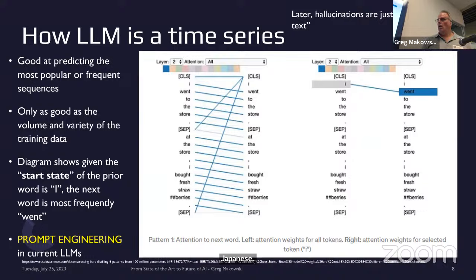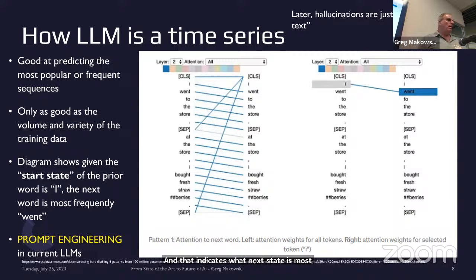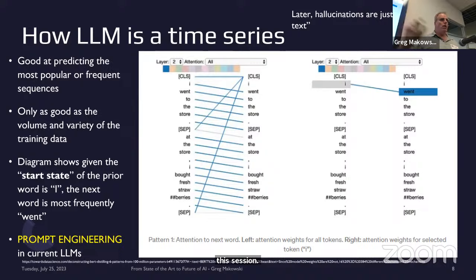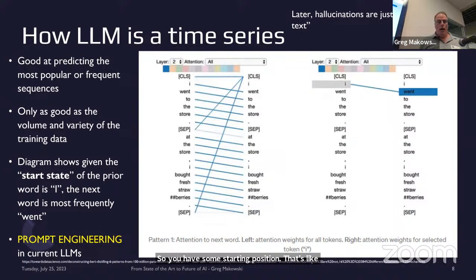You have a starting state and that indicates what next state is most likely. Later on in the large language models, they talk about prompt engineering. A prompt engineering says: for this session, I want you to be a customer service bot, very professional, talk to people like they're at maybe high school level. So you have some starting position. That's going over the words.